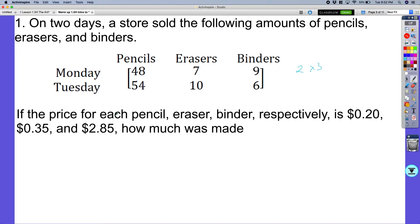Meaning one is going to be on the left-hand side and one is going to be on the top. Since this first matrix is already given to us, that means the second matrix we are going to have it with the items on the left. Excuse me, the cost on the left. So that means I'm going to have the cost of pencils, I'm going to have the cost of erasers, and then I'm going to have the cost of binders.